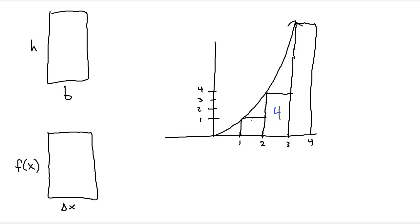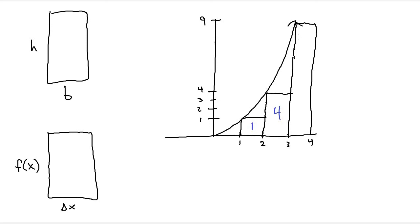For the small rectangle on the left, it has the same delta x of one, since its base goes from one to two. When I plug in one for x, f(1) equals one, so the area is one times one, which is one. For the tallest rectangle on the right, delta x is still one, going from three to four. Plugging in three gives f(3) equals nine, so the area of that rectangle is one times nine, which is nine.